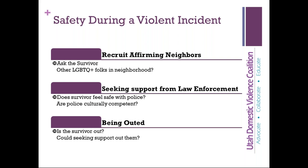For example, coming up with a code word — that's often used in safety planning. Giving neighbors, friends, and others a code word so that if the survivor texts, calls, or says that code word, those people know something's happening and they need to call police or call someone that the survivor and their support system have agreed upon. We do need to remember that calling the police may not always be the best answer, especially for marginalized identities and groups that have historically had issues with police violence.